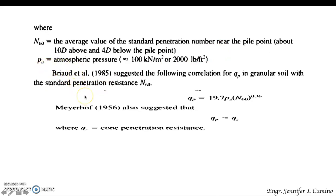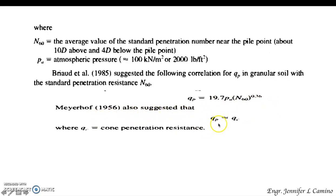According to Brod, the ultimate point resistance in granular soil correlates with the standard penetration resistance value using this equation. Meyerhof also suggested that Q sub P would be equal to the cone penetration resistance Q sub C.